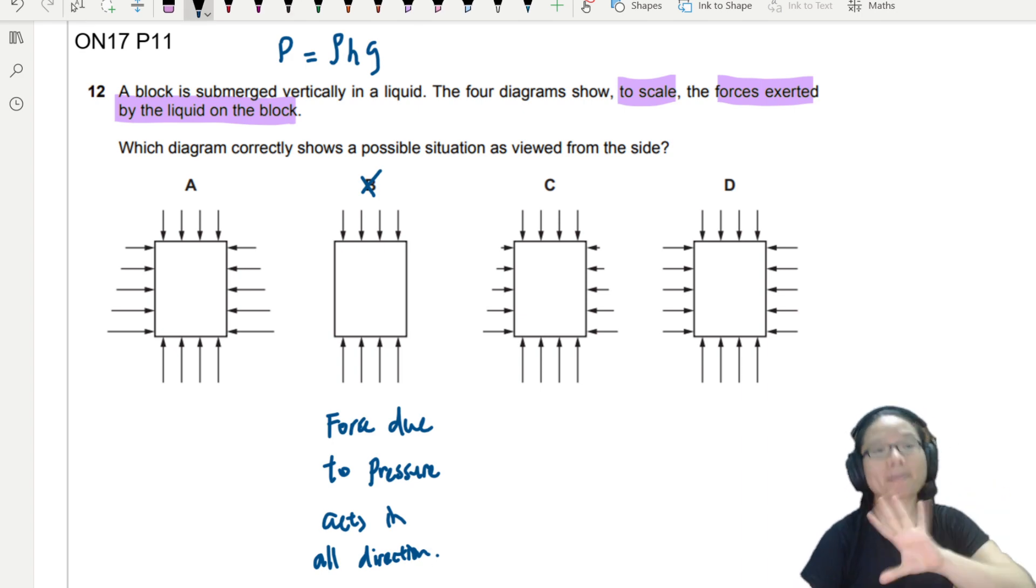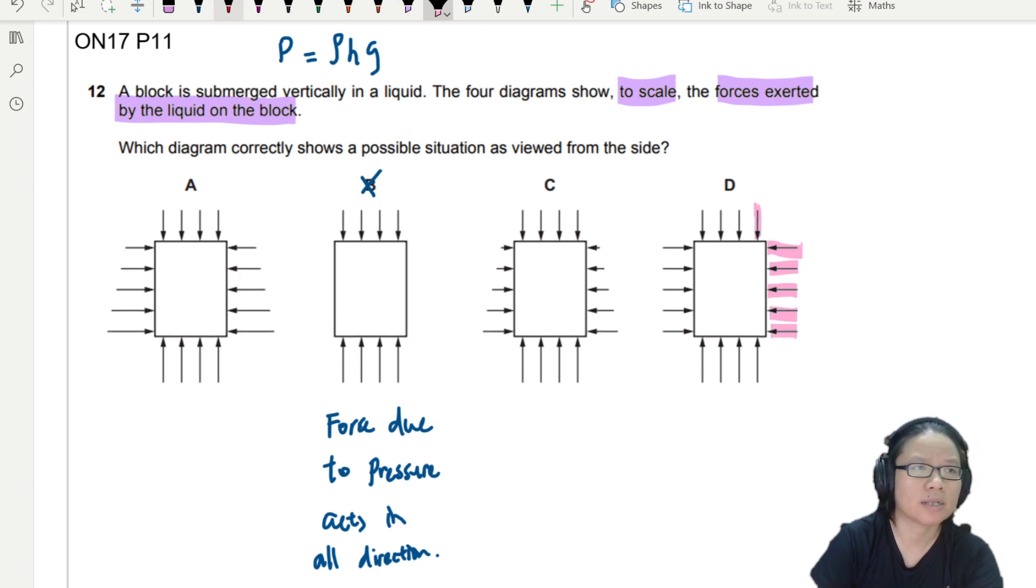Okay, so let's compare the diagram first. The first thing I notice is, option D, the length of the arrows are all the same. Okay, so length of arrows here and here is the same, side here all the same. But if you think about the liquid submerged, right, let's say I draw a water level like that. These are all underwater.